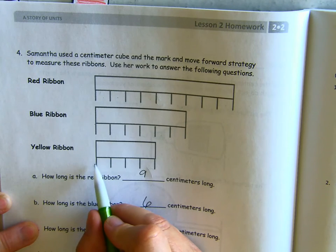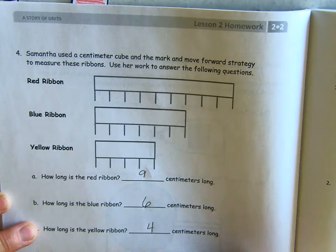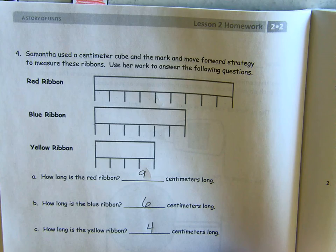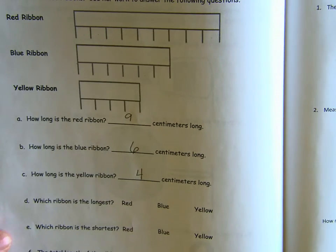How long is the yellow ribbon? Again, make sure you're counting the spaces. One, two, three, four centimeters long. I'm going to move my page up a little bit so that we can still see.